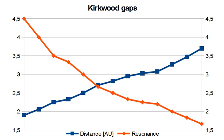Weaker and/or narrower gaps are also found at 1.9 AU (9-to-2 resonance), 2.25 AU (7-to-2 resonance), 2.33 AU (10-to-3 resonance), 2.71 AU (8-to-3 resonance), 3.03 AU (9-to-4 resonance), 3.075 AU (11-to-5 resonance), 3.47 AU (11-to-6 resonance), and 3.7 AU (5-to-3 resonance).